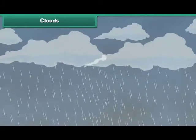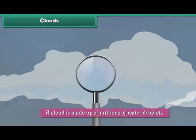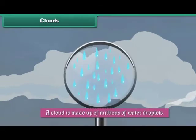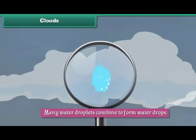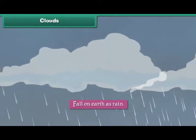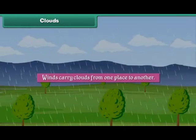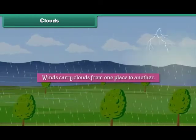Clouds bring rains. A cloud is made up of millions of water droplets. Many water droplets combine to form water drops. As the drops grow in size, they become heavy and fall on earth as rain. Winds carry clouds from one place to another.